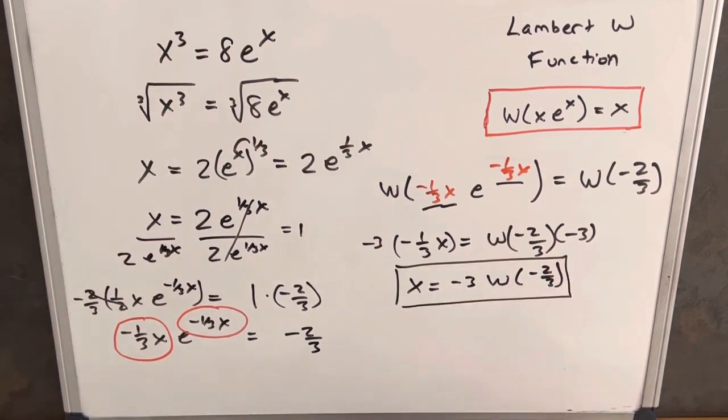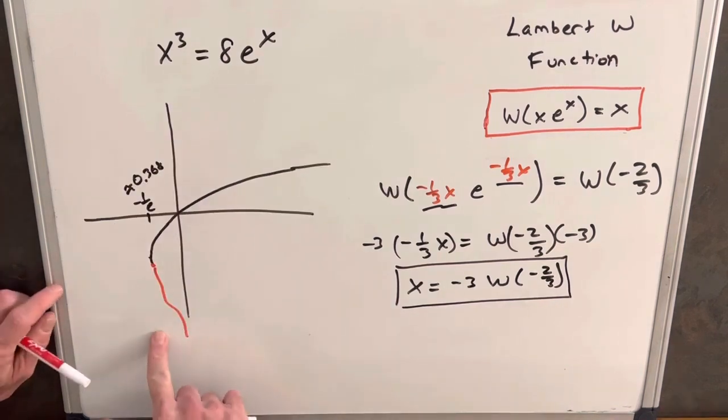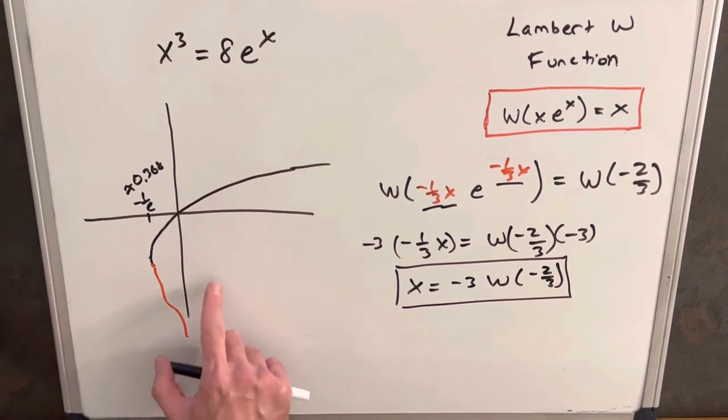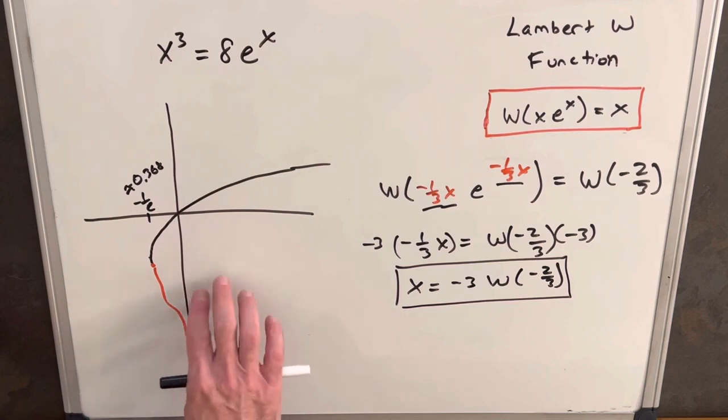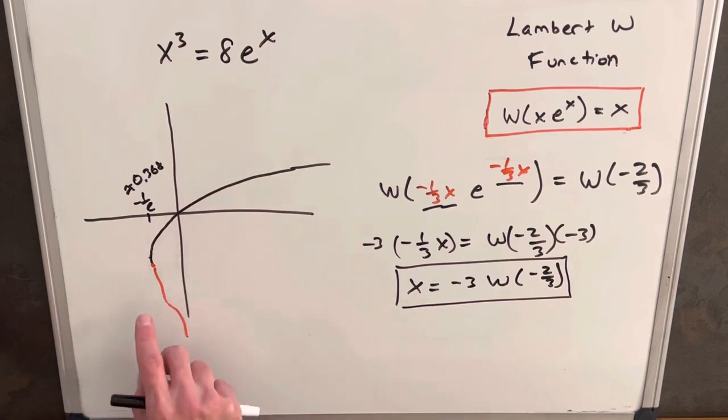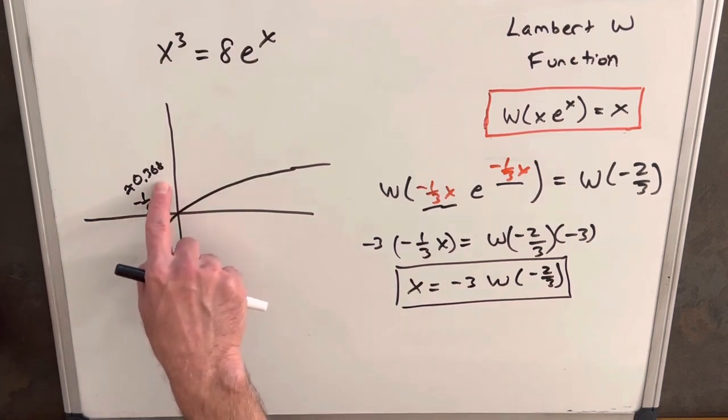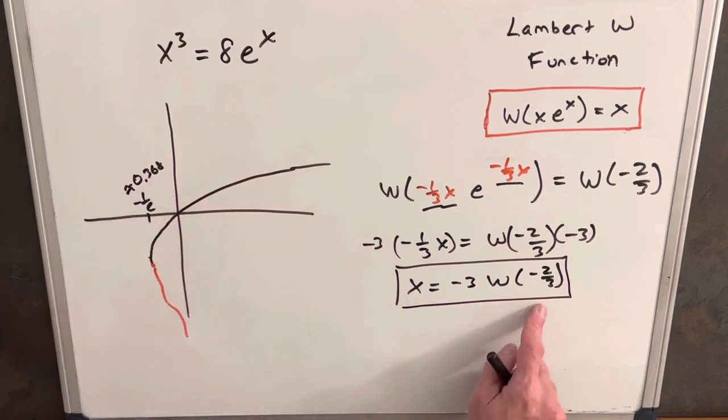Now the question is: is this a real solution, and if so, are there other real solutions? Looking at this rough graph, we want to see when we have real solutions. Our domain where we're going to have a real solution is greater than or equal to -1/e, which is about -0.368. -2/3 is around -0.667.